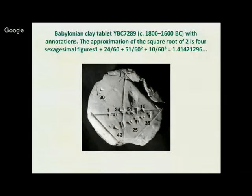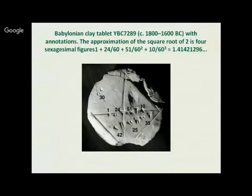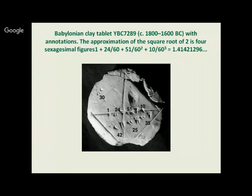This is a Babylonian clay tablet which shows the approximation of the square root of 2. You can see the numbers 1, 24, 51, and 10 written on the tablet in the sexagesimal number system. The square root of 2 — the hypotenuse of a triangle of side 1 — is calculated by the formula 1 plus 24/60 plus 51/60² plus 10/60³, giving 1.41421296, correct up to 8 decimal places. This was 1600 to 1800 years before Christ — nearly 4,000 years ago.